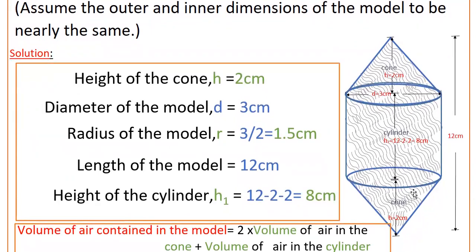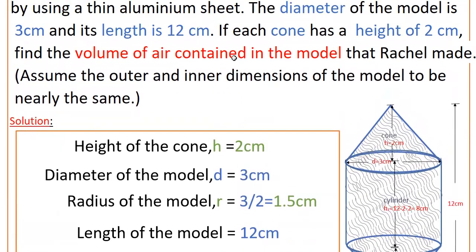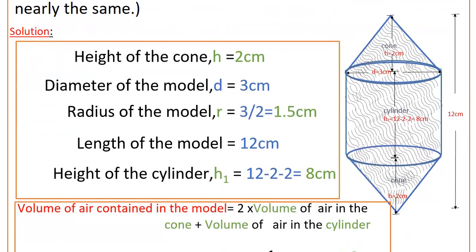Now here you have to find volume of air contained in the model. So volume is equal to total volume is volume of this cone plus volume of this cylinder plus again volume of this cone. So total volume of air contained in the model is equal to 2 into, because there are two cones.